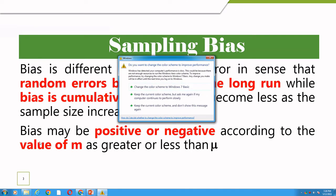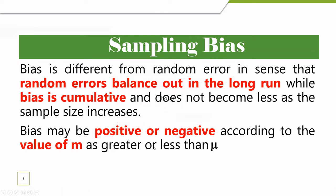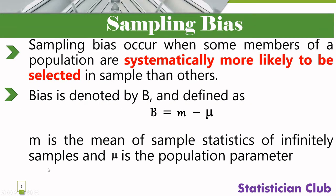Bias may be positive or negative according to the value of m. If the value of m is greater than mu, bias will be positive. If the value of m is less than mu, the bias will be negative. So bias attains both positive and negative values depending on the value of m: a larger value of m produces positive bias, while a smaller value of m produces negative bias.